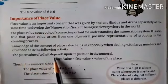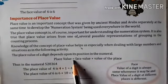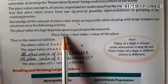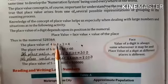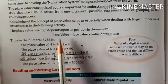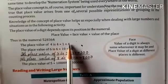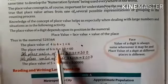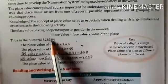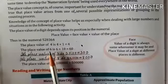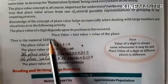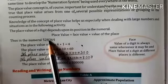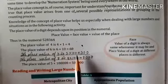Now we will discuss about place value. The place value of a digit depends upon its position in the numeral. Place value equals face value multiplied by the value of the place. We apply this formula to find the place value. For example, the place value of 4 in the ones place: face value is 4, multiplied by 1, equals 4. The place value of 6 in the tens place: 6 into 10 equals 60. The place value of 3 in the hundreds place: 3 into 100 equals 300.